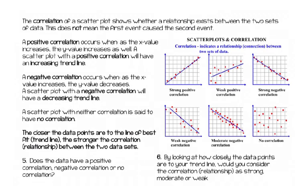The next thing is the word correlation. Correlation basically tells us whether there is a relationship between the two sets of data. Is there a relationship between the age you guessed and the age they actually are? Yes — usually if people are older they look older, and if people are younger they usually look younger. That's usually a good clue.